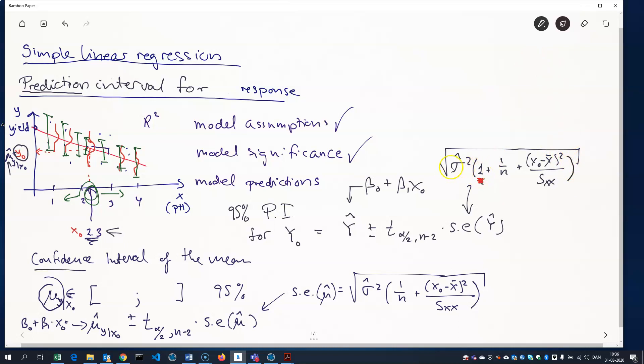This term here makes the standard error for the prediction interval greater than it was for the mean response. Why is that? Well, to explain that, I'll do a different example, which is a little more tangible, I hope.